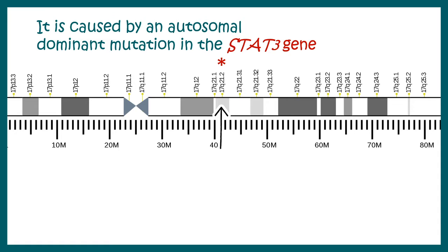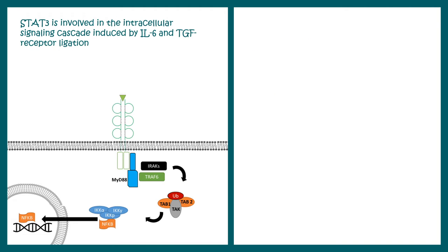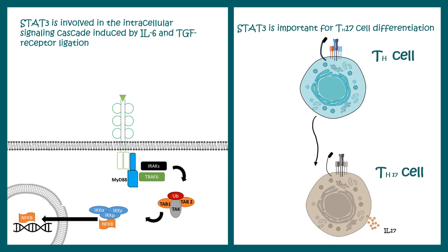A mutation in the STAT3 gene is the causal factor for Job Syndrome. STAT3 is involved in the intracellular signaling cascades of IL-6, TGF-beta, and others. All of these signaling pathways are critically important for cytokine responses and for the development of T and B lymphocytes, which is why STAT3 signaling is so important.